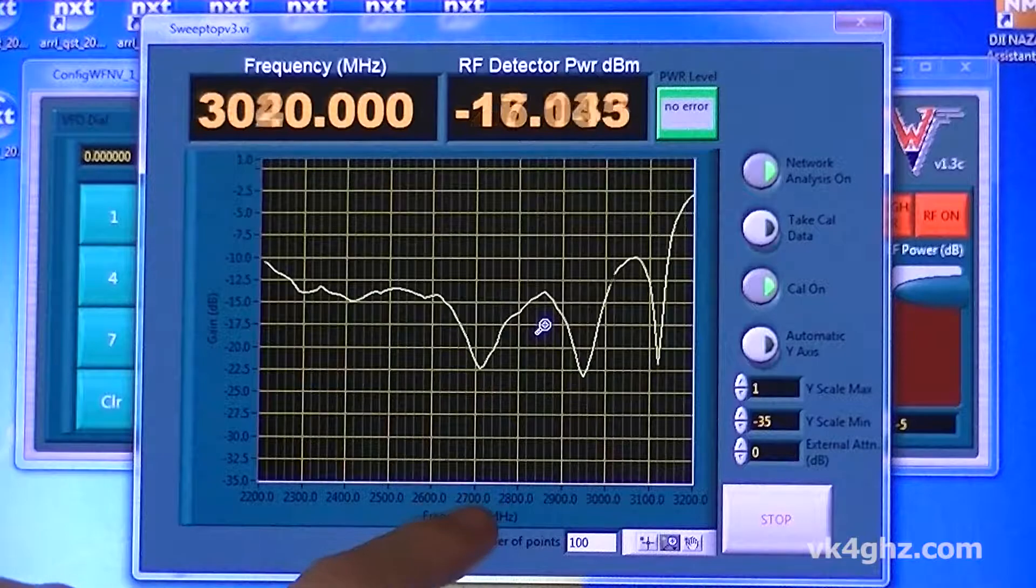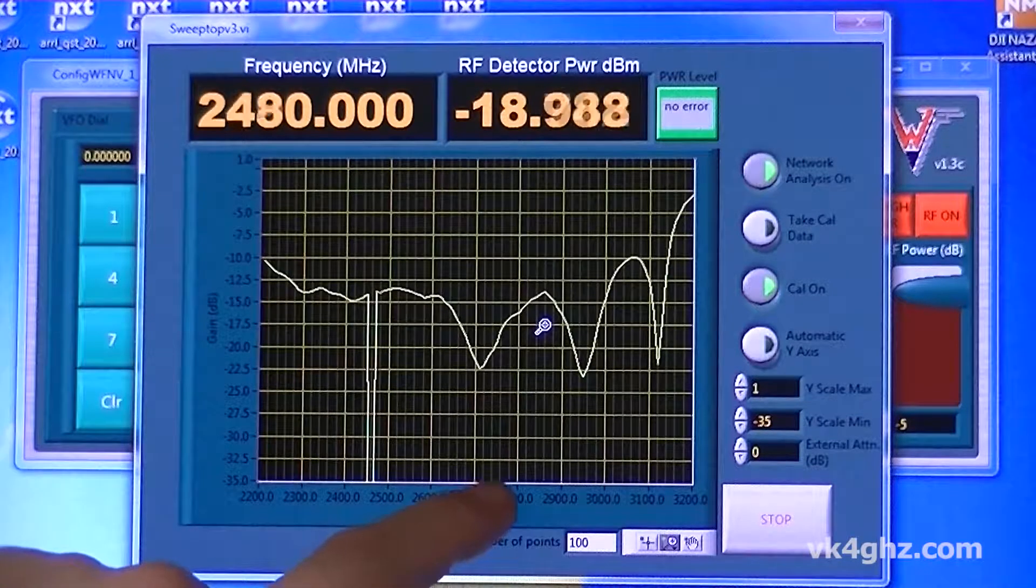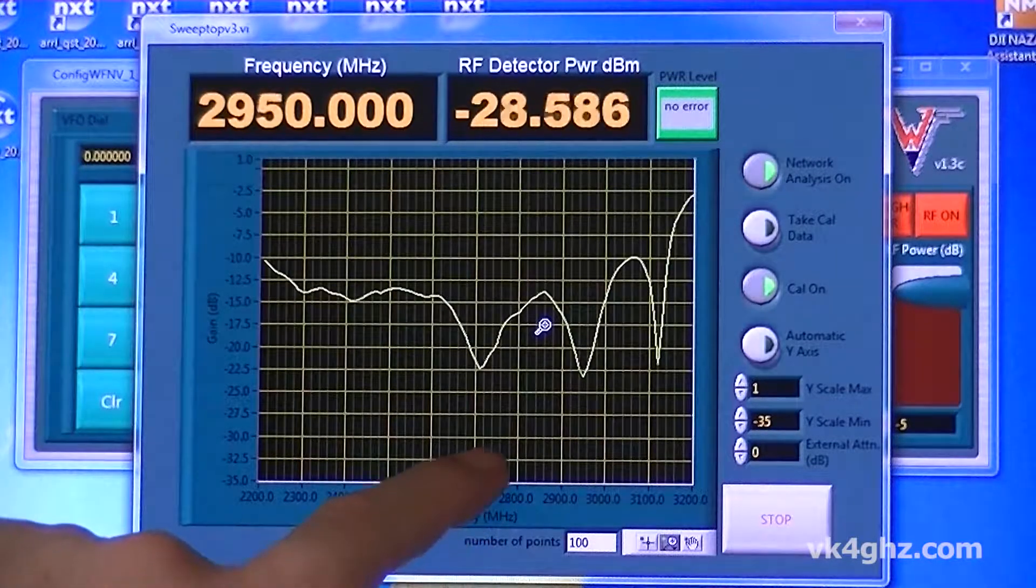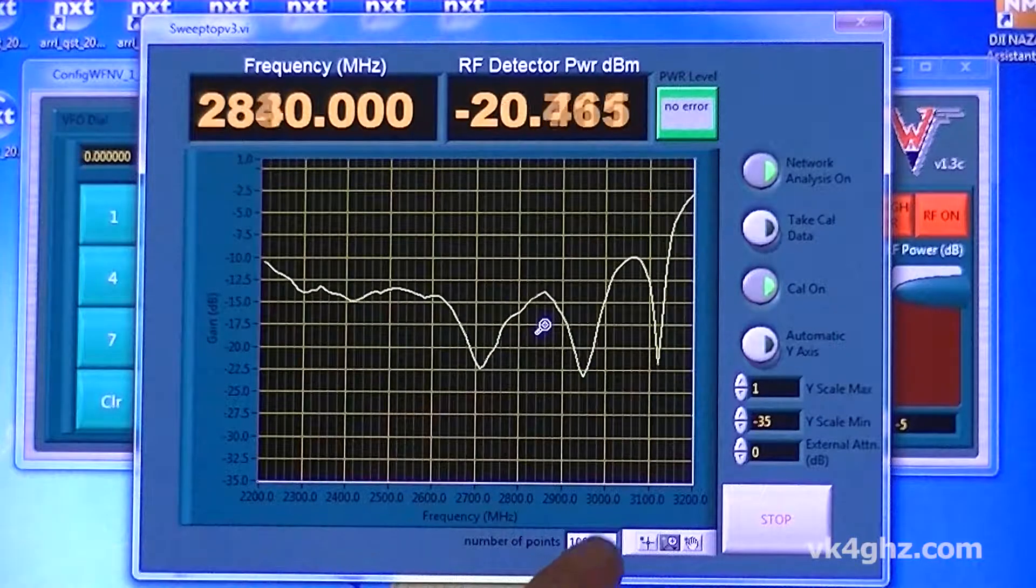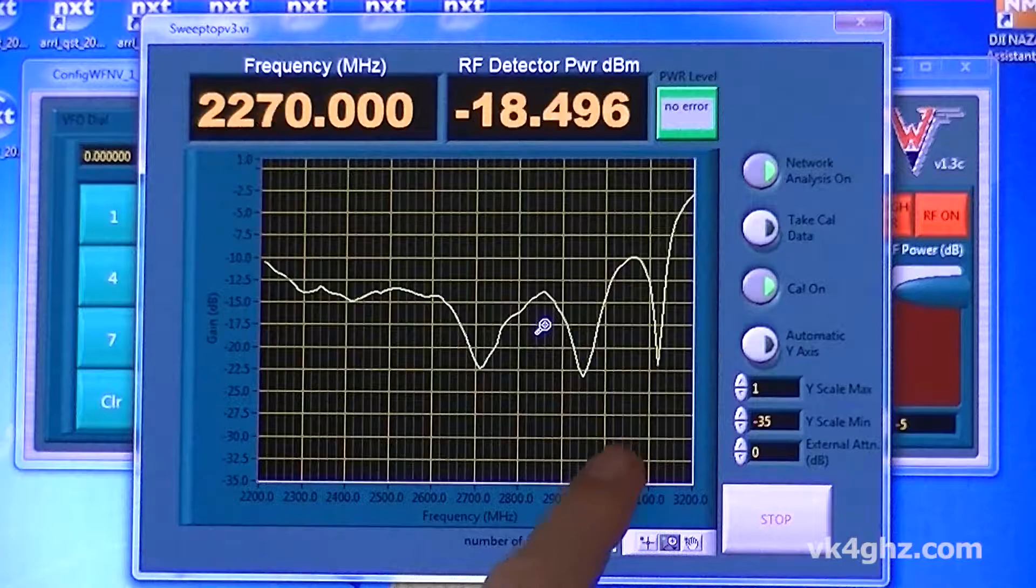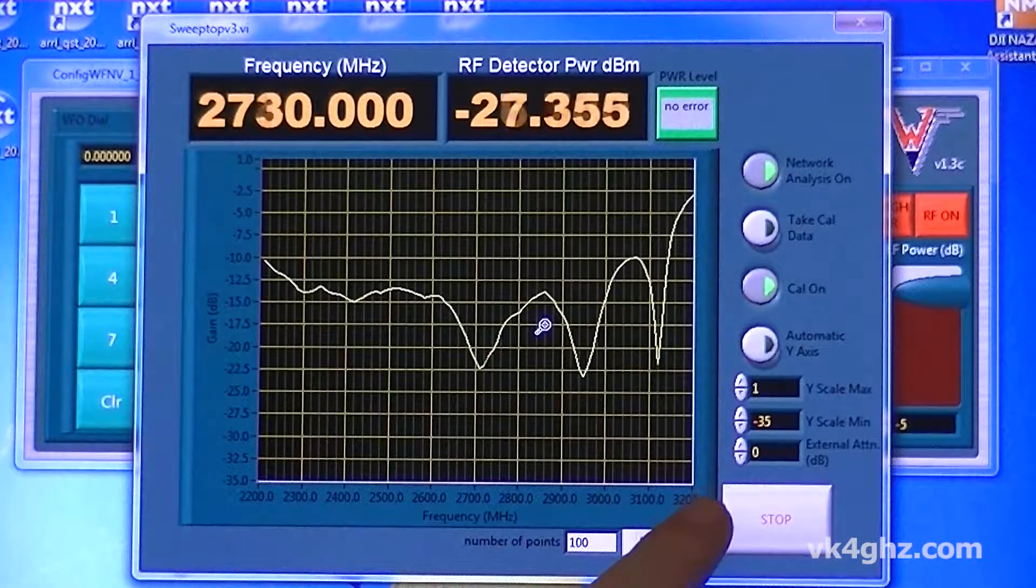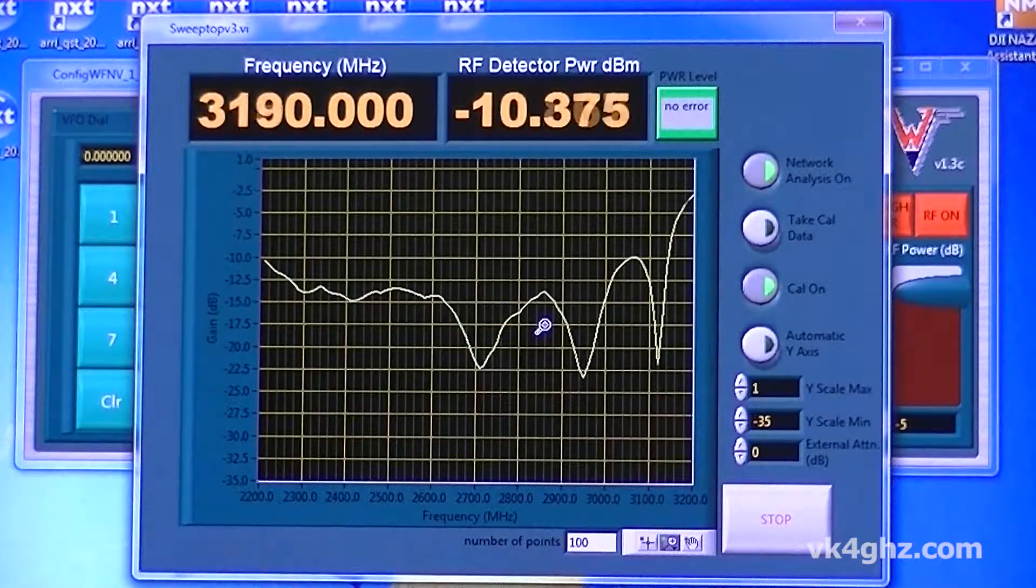Now these major grids are 100 megahertz, so there's five minor grids, they're 20 megs wide. We can see we're getting a dip at around 2720, another dip at 2950, and a third dip at 3120.